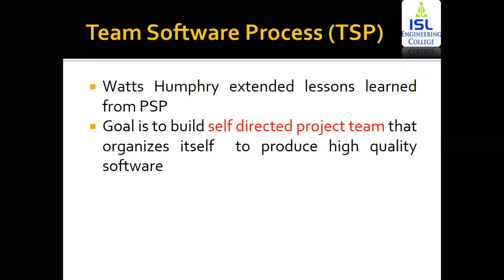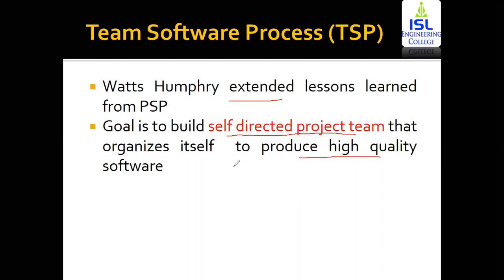The next software process model is Team Software Process. The personal software process model was developed by Watts Humphrey, and the same person extended the lessons learned from PSP. When a requirement comes to develop a lengthy, large, bulky software, it requires not just one person but multiple people — a team. The goal of TSP is to build self-directed project teams. These are teams that direct themselves — they know what needs to be done within a software project and they produce high quality software.